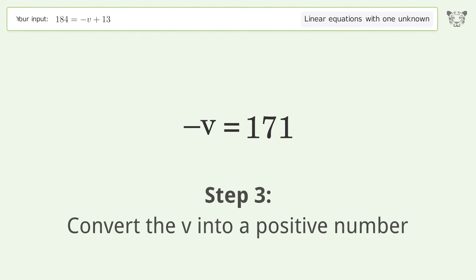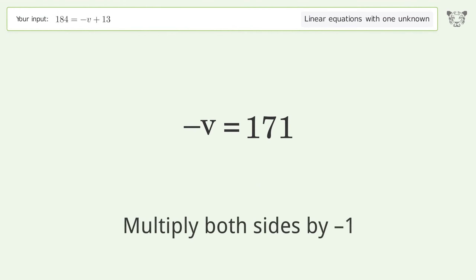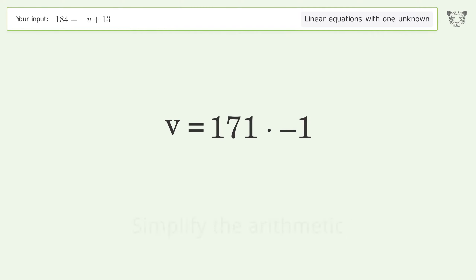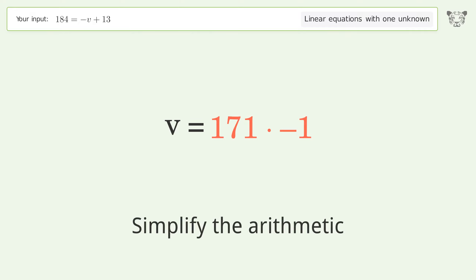Convert v into a positive number — multiply both sides by negative one. Remove the ones, then simplify the arithmetic.